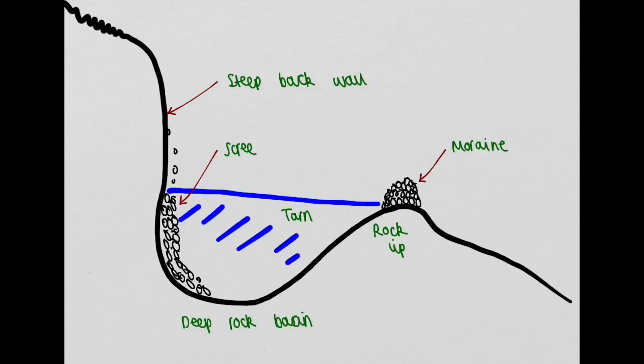When the ice melts, a corrie lake, which we can also refer to as a tarn, can form within the corrie. This landscape you see in front of you is something you would expect to see in a post-glacial environment.